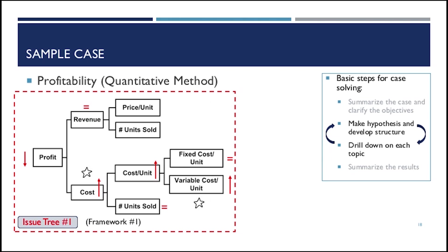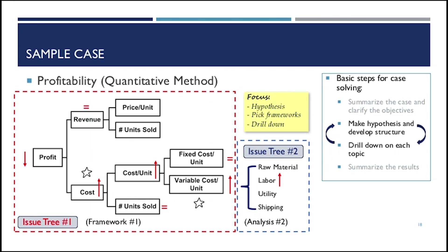With that, we know the problem is in variable cost. And we have a new hypothesis. The hypothesis is the increase in the variable cost is contributed to the profit decrease a lot. So with the new hypothesis, we have a new structure by asking questions like, what are the components of the variable cost? And the client or the interviewer will tell you, we have four components: the raw material, labor, utility, and shipping. And that's your issue tree because it's based on your analysis. Of course, we probe a little bit more and see that the labor is the major cause of the problem. In this step, we focus on three points: hypothesis, pick the frameworks that helps you to solve the problem, and also how to drill down.